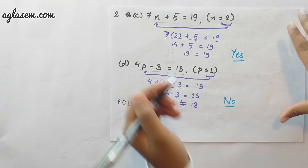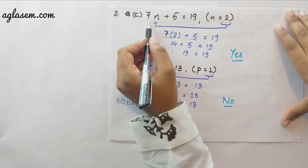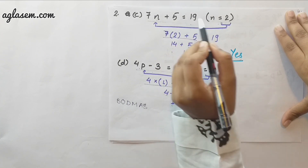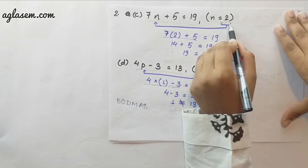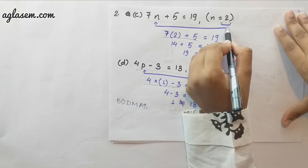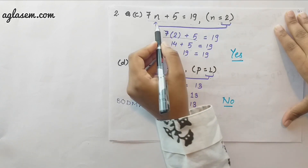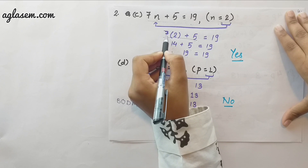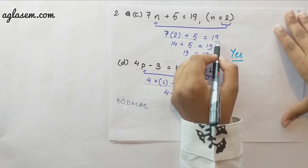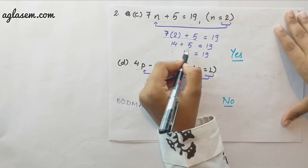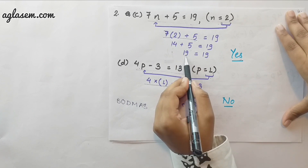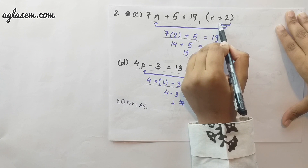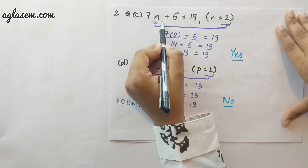In the next sub-question, the equation is 7n plus 5 equals to 19 and the value of n is 2. We put the value into the equation: 7 into 2 plus 5 equals to 19. 14 plus 5 equals to 19. 19 is equal to 19, hence this value of n satisfies the equation.